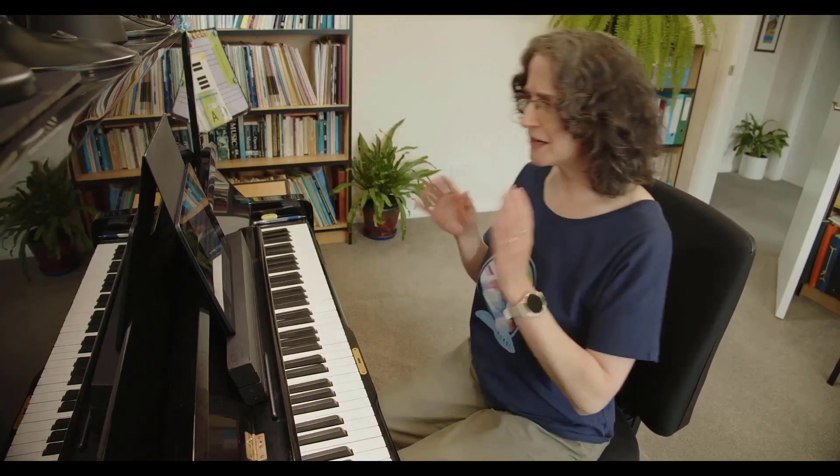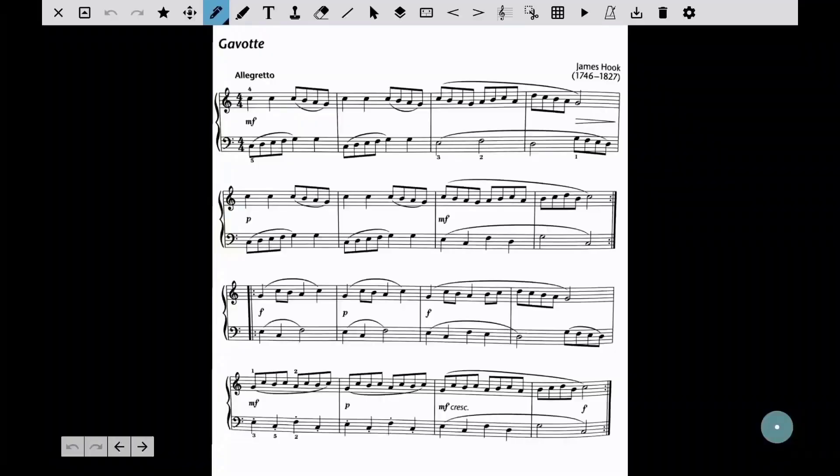I'm going to play just a tiny little excerpt from this piece by James Hook. It's a lovely little gavotte. I'll play you the first line and listen out for the different types of touch in each hand.